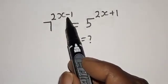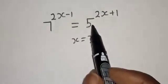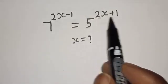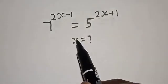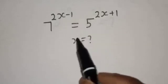7 raised to power 2s minus 1 is equal to 5 raised to power 2s plus 1. What is the value of s?